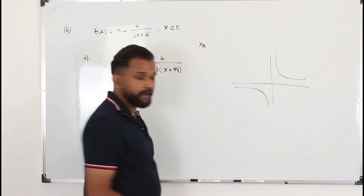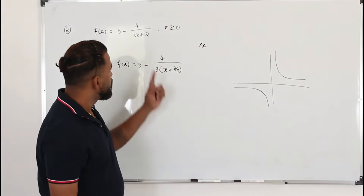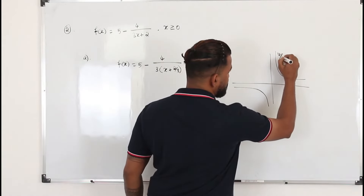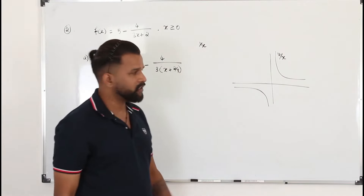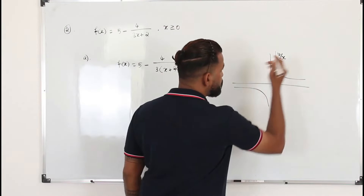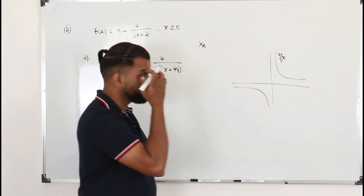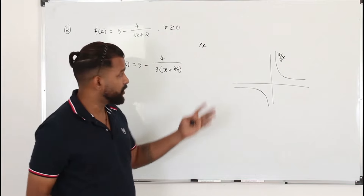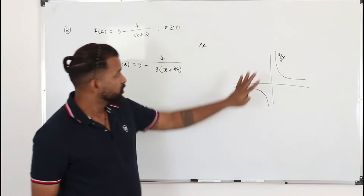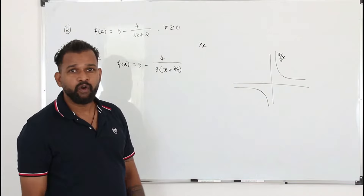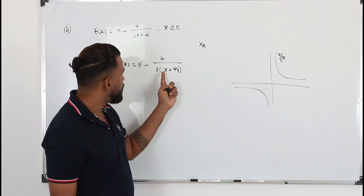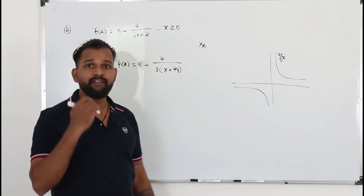We all know the graph of 1 over x. If it's 4 over x or even 4 over 3x, the shape is the same — you don't need to worry about stretching, because anyway the graph won't cross any axis. So this is 4 over 3x. Now in this graph, if you replace x by x plus 2 over 3...